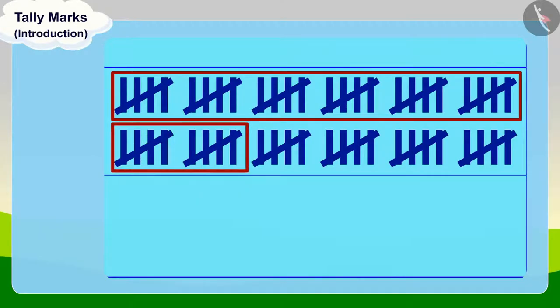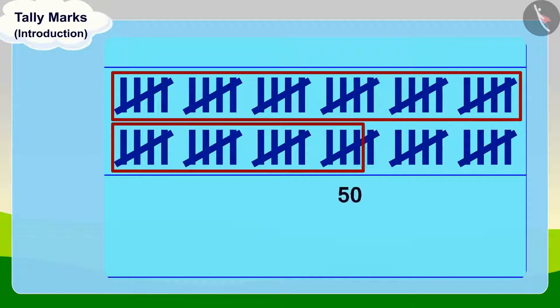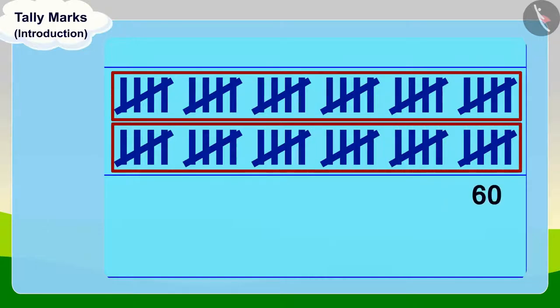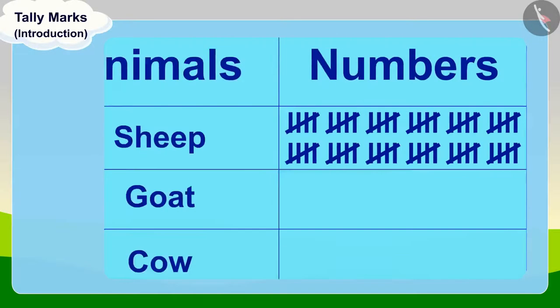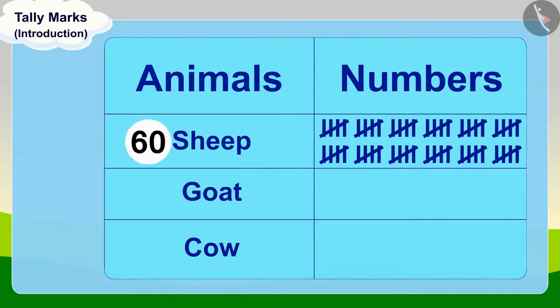Appu continued counting: forty, forty-five, fifty, fifty-five and sixty. There are a total of sixty sheep.